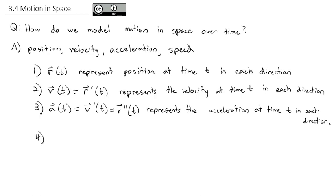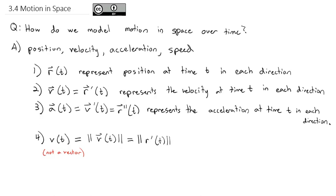We're going to introduce a fourth quantity: v(t) — notice this is not marked as a vector. This is a scalar-valued function, and it represents speed. We calculate it by taking the magnitude of the velocity vector. So if it's a vector, it represents velocity; if it's a scalar, it represents speed — the magnitude of the position vector's derivative. This represents the overall speed of the particle, not in any particular direction.